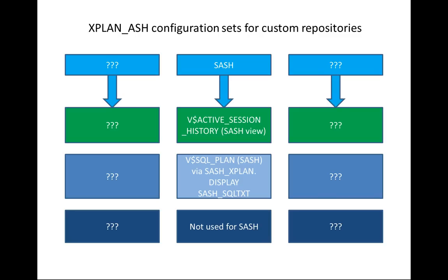You can also have custom configuration sets in Xplanash, and one already provided relates to the free active session history implementation SESH. The SESH configuration is automatically selected if the script detects it's executed in the SESH repository owner schema, and will then use the corresponding SESH views — a V$ACTIVE_SESSION_HISTORY view, a V$SQL_PLAN view, and a custom SESH explain display function for displaying a formatted execution plan. Real-time SQL monitoring information is not available in that case.